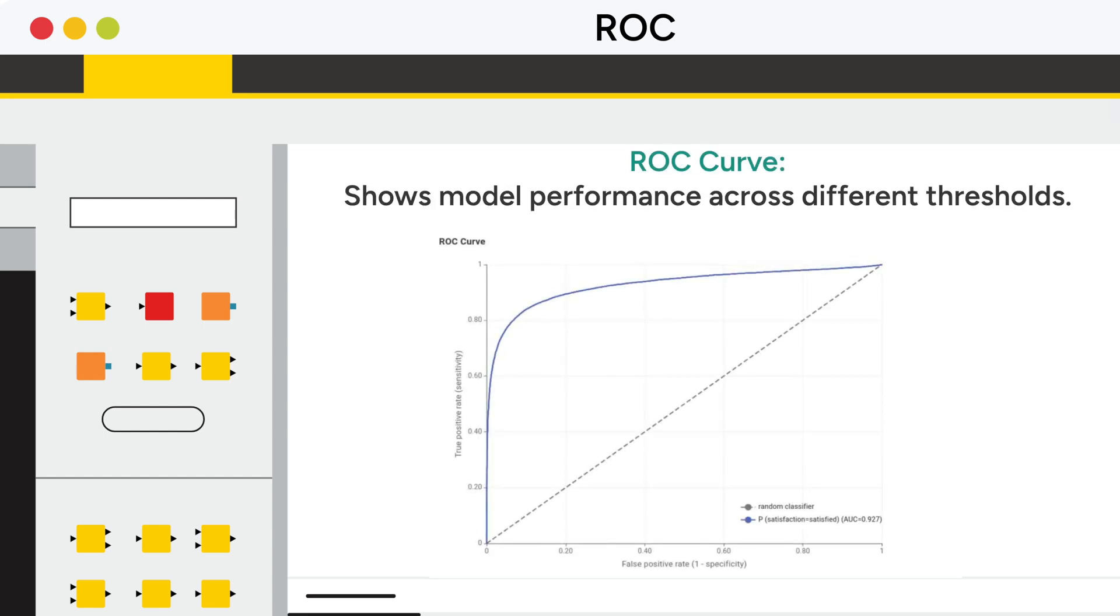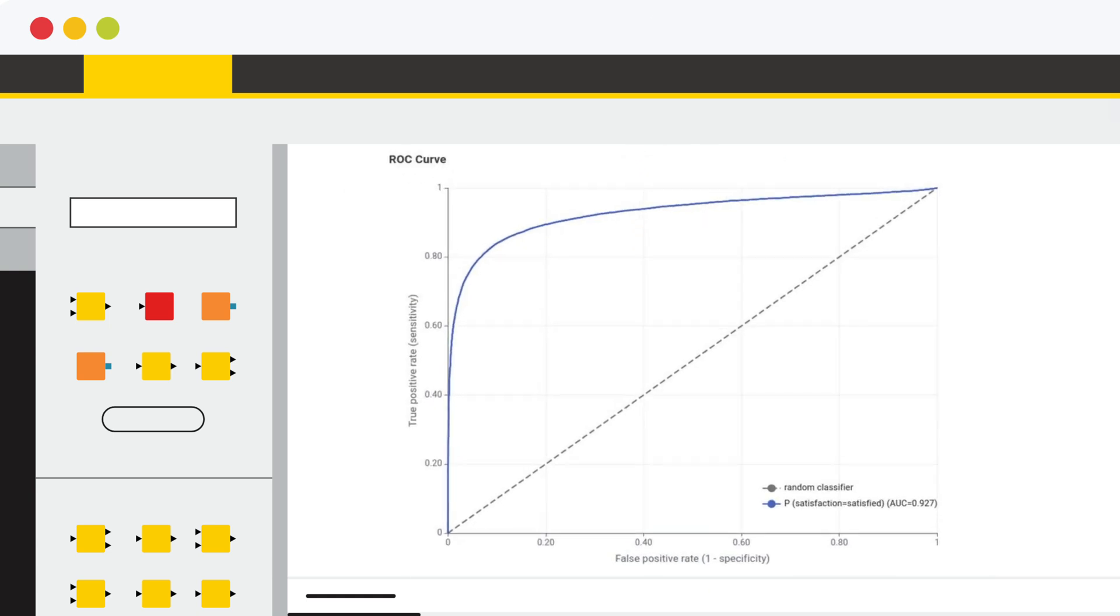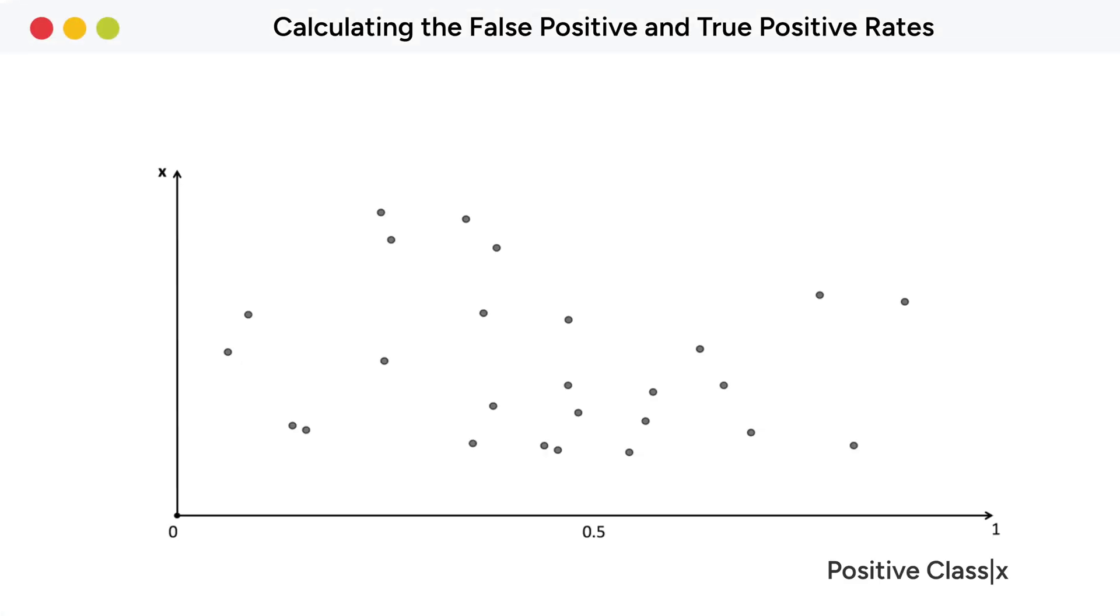The ROC Curve attempts to provide a more comprehensive view of the model's performance for different classification thresholds. Here you see the ROC Curve. On the x-axis, you see the false positive rate, and on the y-axis, the true positive rate. This blue line is the ROC Curve of the trained model, and the black line is the ROC Curve of a random classifier.